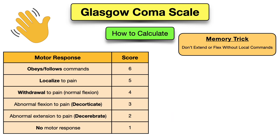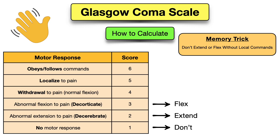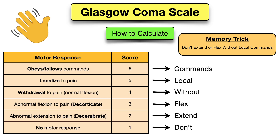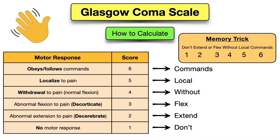You can use the memory trick mnemonic 'don't extend or flex without local commands.' Don't represents a score of one — no motor response. Extend represents two — abnormal extension to pain. Flex represents three — abnormal flexion to pain. Without represents four — withdrawal to pain; use the prefix 'with' to remember it. Local represents five — localized to pain. Commands represents six — following commands. So remember: don't extend or flex without local commands — one, two, three, four, five, six.